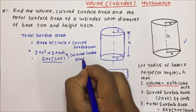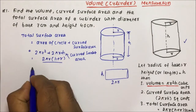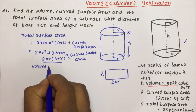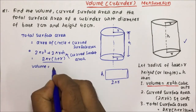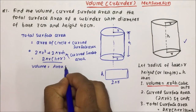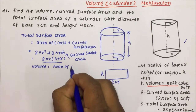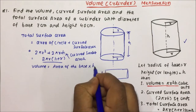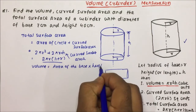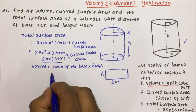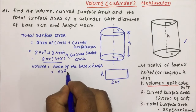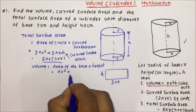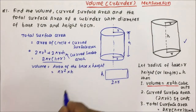Now for the volume — volume is nothing but the area of the base into height. Area of the base is the circle area, which is πr², and height is h. So volume = πr²h.